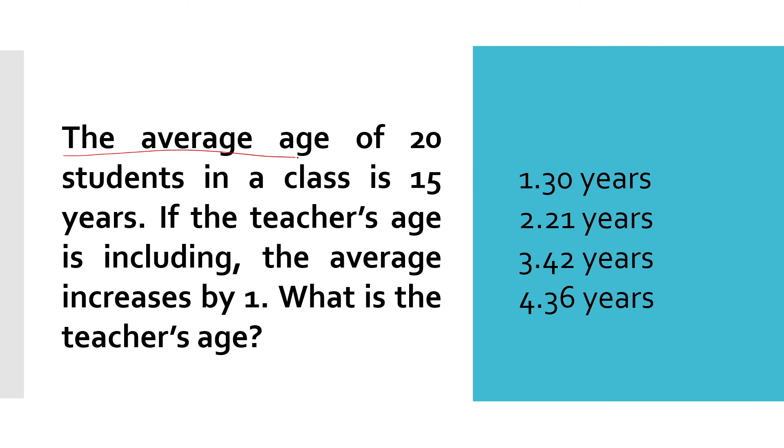Next: The average age of 20 students in a class is 15 years. If the teacher's age is included, the average increases by 1. What is the age of the teacher? We have the average age of 15 and 20 students, so the total age of all students will be 20 into 15. Plus teacher's age X, divided by 20 students plus one teacher, which is 21, equals the average increases by 1, so it becomes 16.